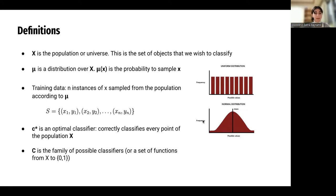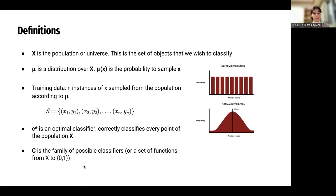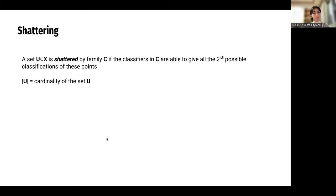Next, we have C*, the optimal classifier — it correctly classifies every point of the population X. Then we have C, capital C, which is the family of possible classifiers. We can also call it a set of functions from X to {0, 1}. Throughout this presentation and in our lemma, we assume binary classification: any input can produce an output of either zero or one.